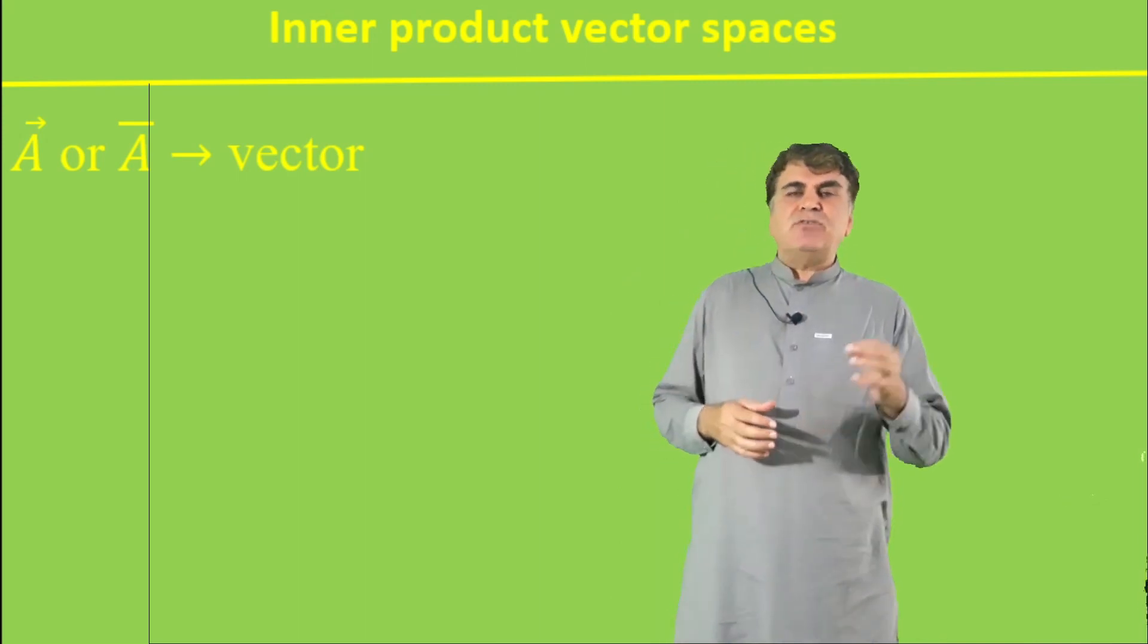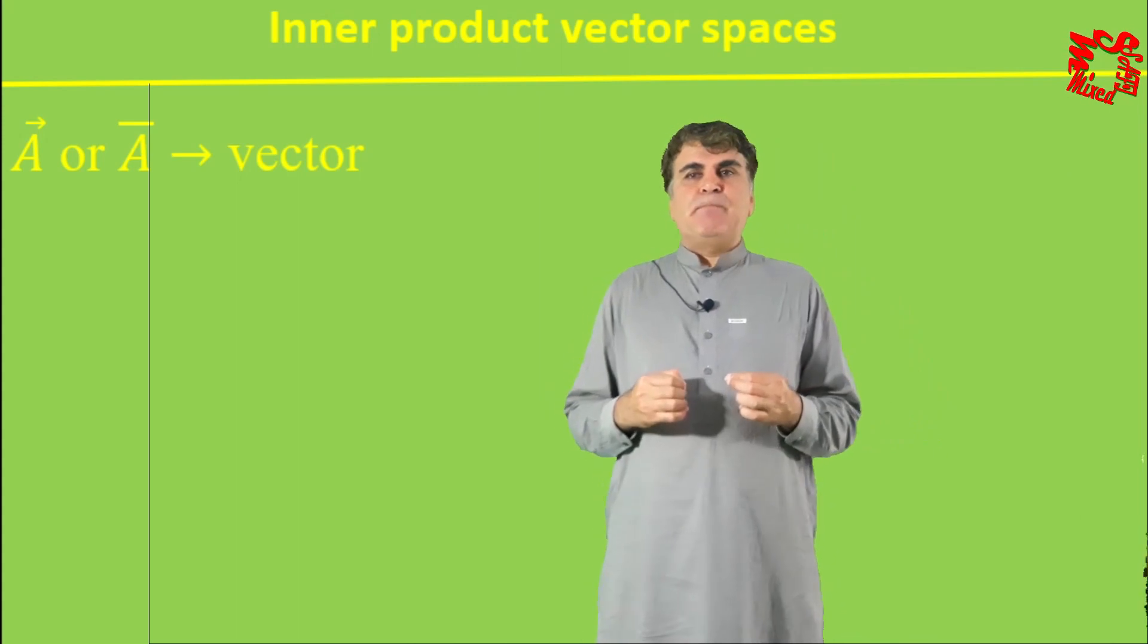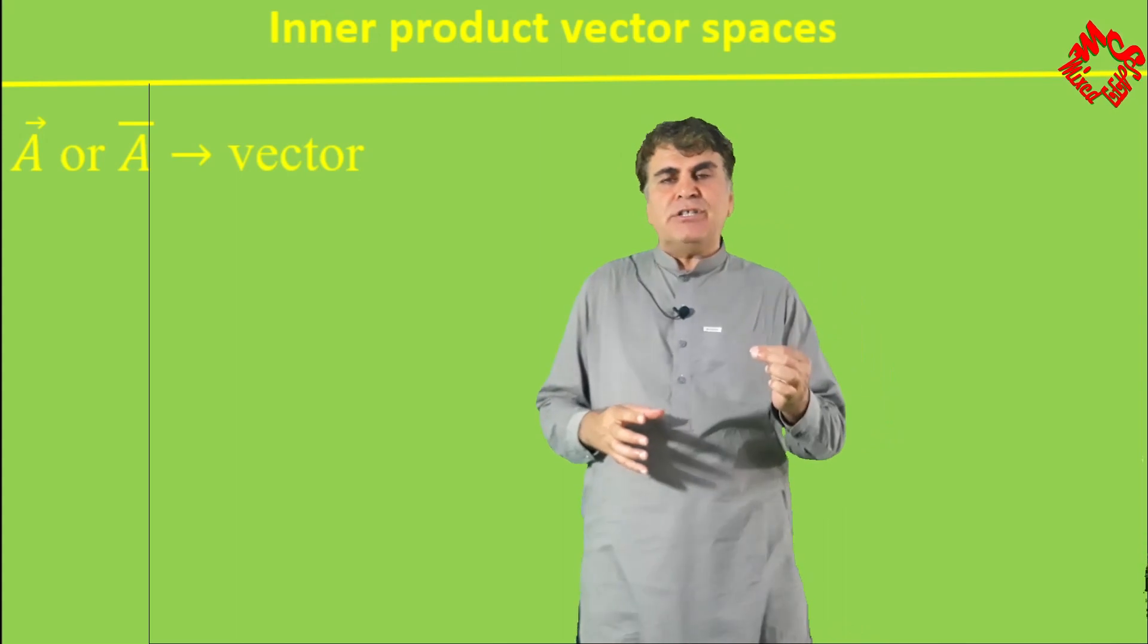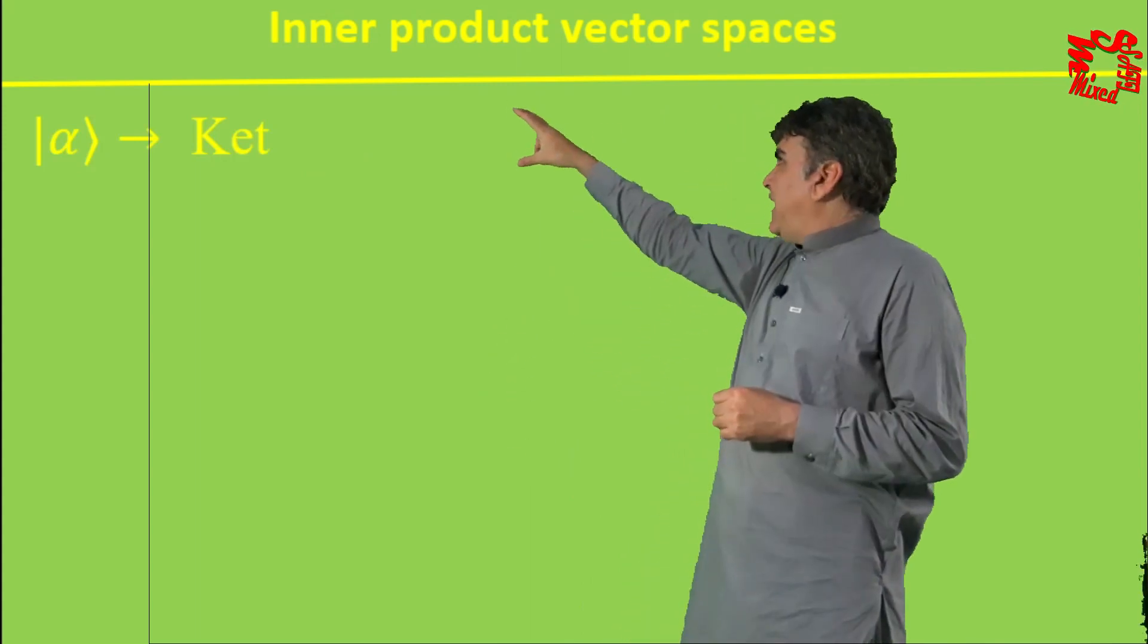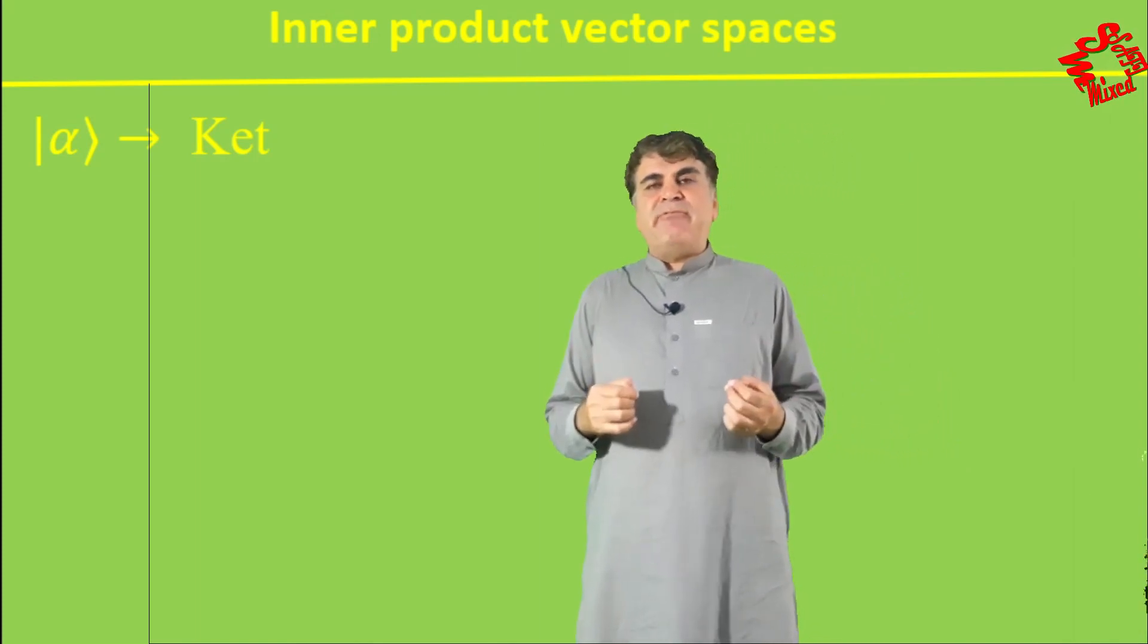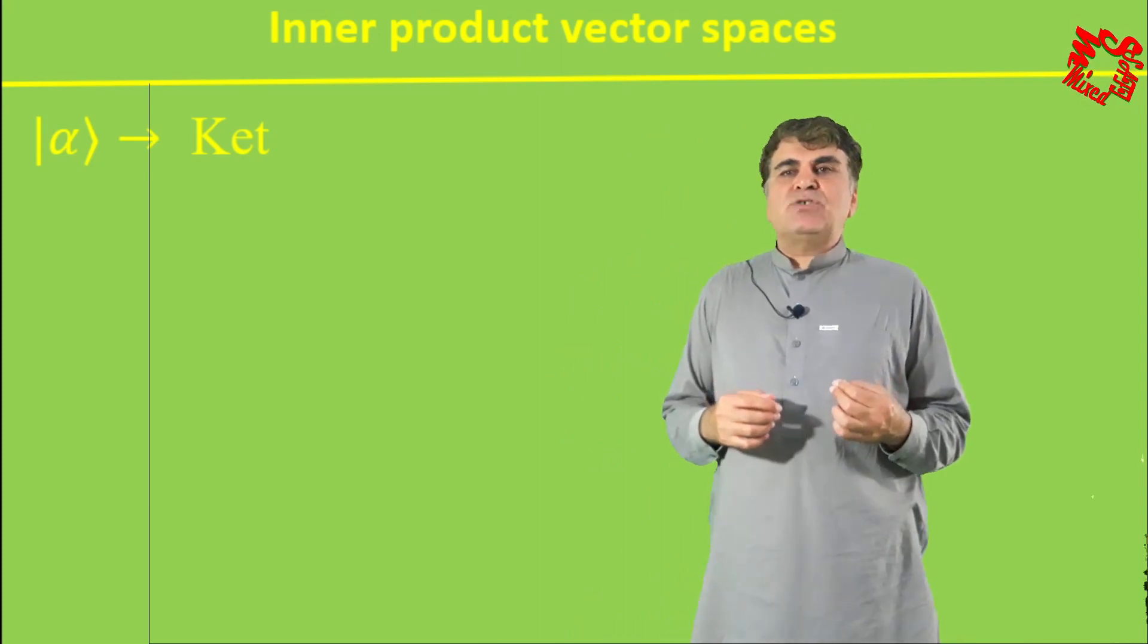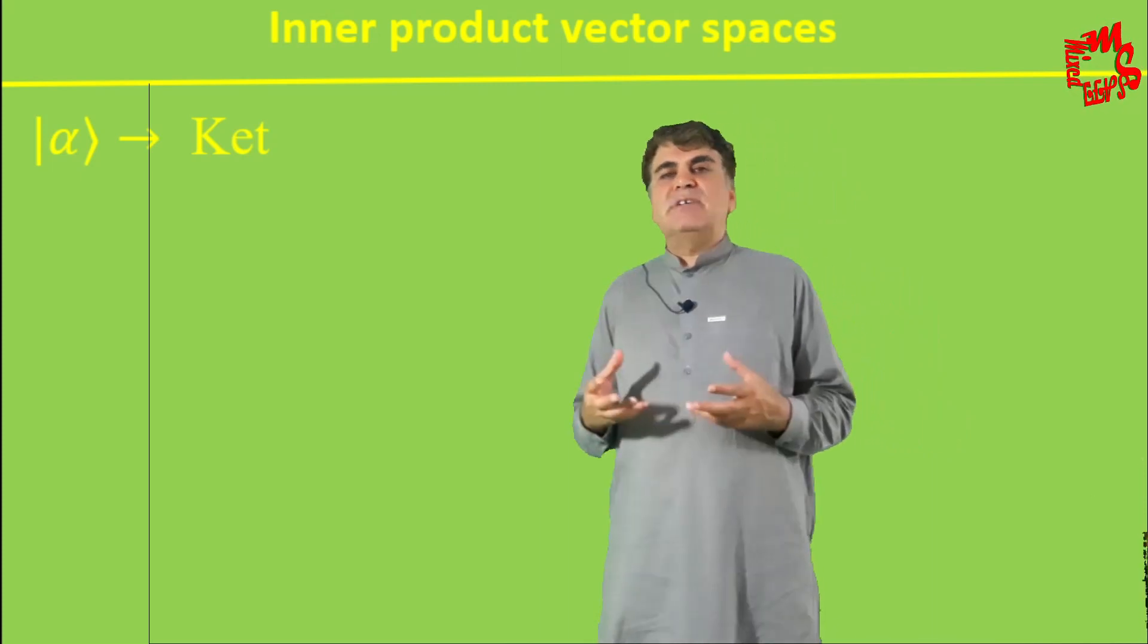For a vector space over the field of complex numbers, there is another very fascinating notation first introduced by Paul Dirac for the elements of Hilbert space. The elements of vector space over the field F of complex numbers are usually represented by enclosing a Roman alphabet with a vertical bar and an angled bracket in the form of this. Instead of calling it an element of vector space or simply a vector, physicists call it a ket. So for physicists, a ket is an element of vector space over the field of complex numbers, and for physicists such a space is the well-known Hilbert space.